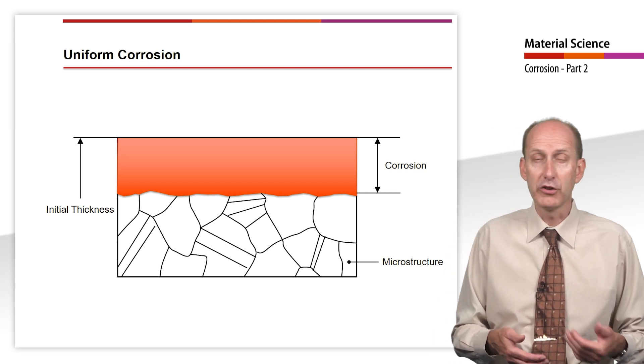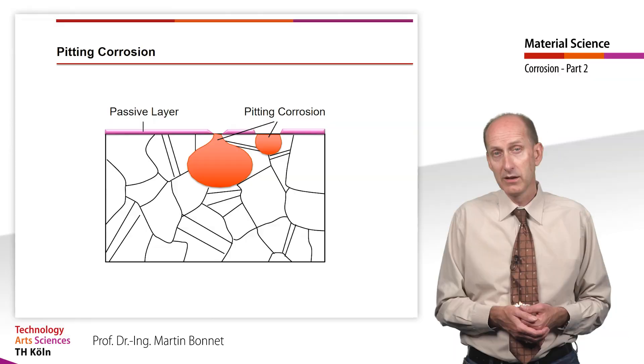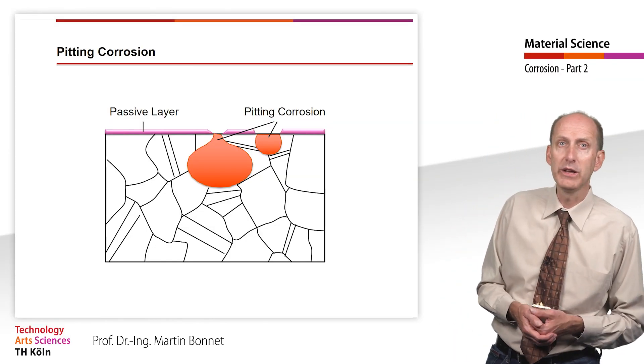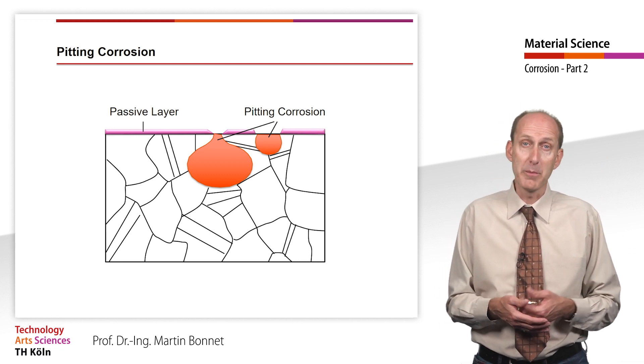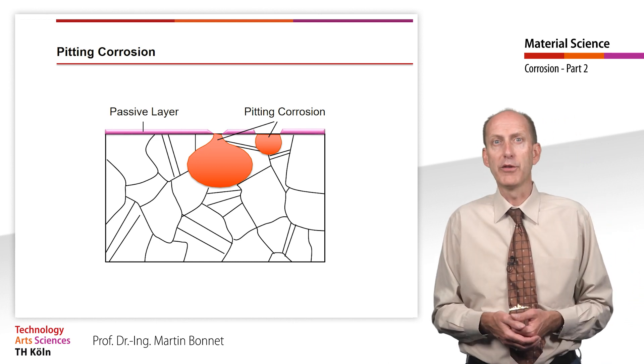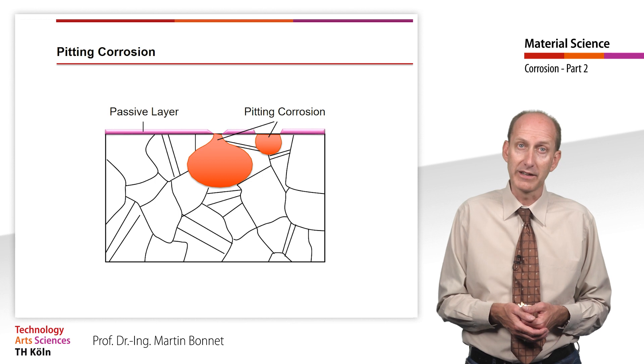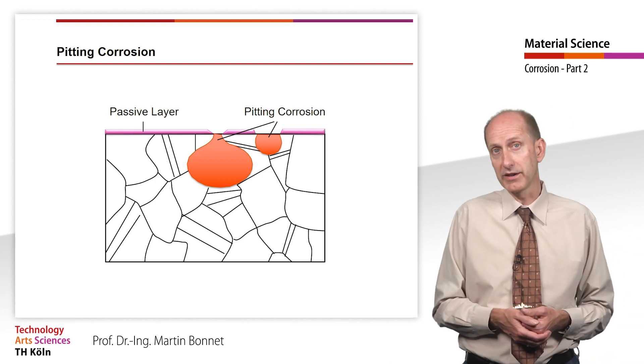That is to say, material is removed uniformly over the entire surface. In the videos on high alloy steel, we learned that stainless steel does not have stainless properties because the main alloying element iron is noble, but rather because of the passive layer of chromium oxide that forms on the surface if the chromium content is sufficient.